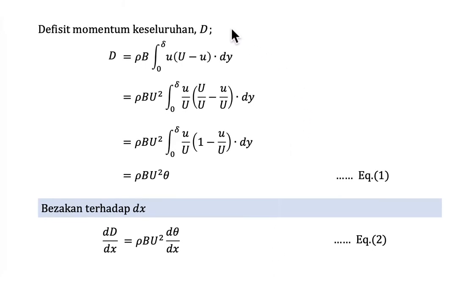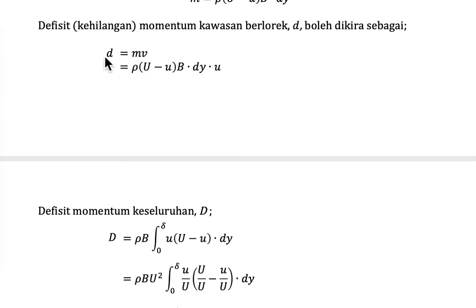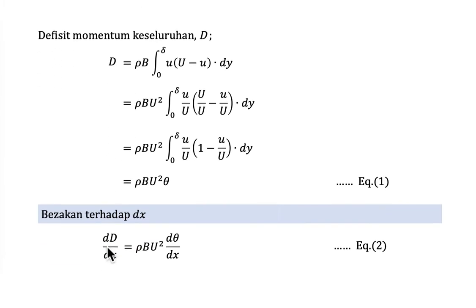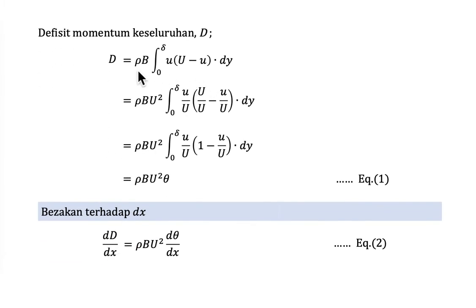Then to get the total amount of deficit momentum, we integrate the value here. We integrate the small d here so we could get the total deficit momentum. So we could write the previous equation become rho B integral from 0 to delta U capital U minus U dy.